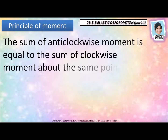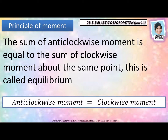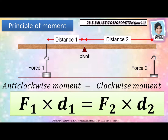According to the principle of moments, the sum of anti-clockwise moment is equal to the sum of clockwise moment about the same point. This is called equilibrium. Therefore, according to the principle of moments, anti-clockwise moment is equal to clockwise moment. In this picture, we can see there are two forces, force 1 and force 2. Force 1 and distance 1 is anti-clockwise moment, whereas force 2 and distance 2 is clockwise moment. So to do calculation using the principle of moments, you will use F1 times D1 equal to F2 times D2.